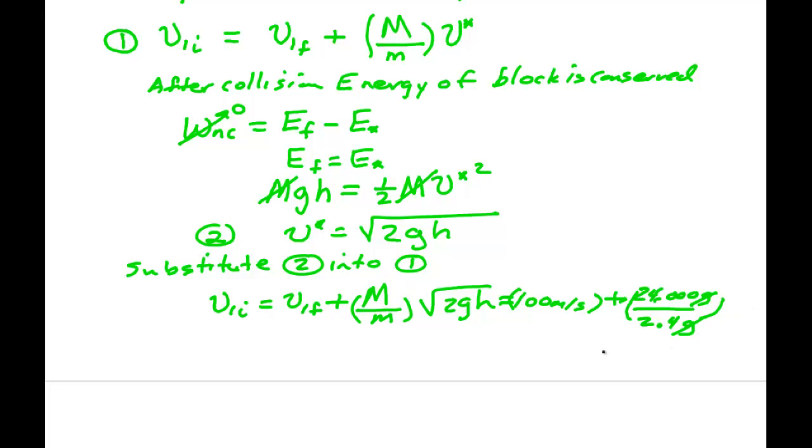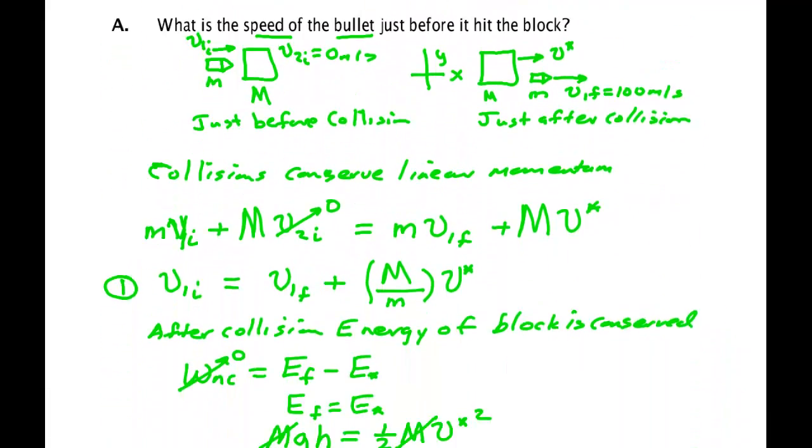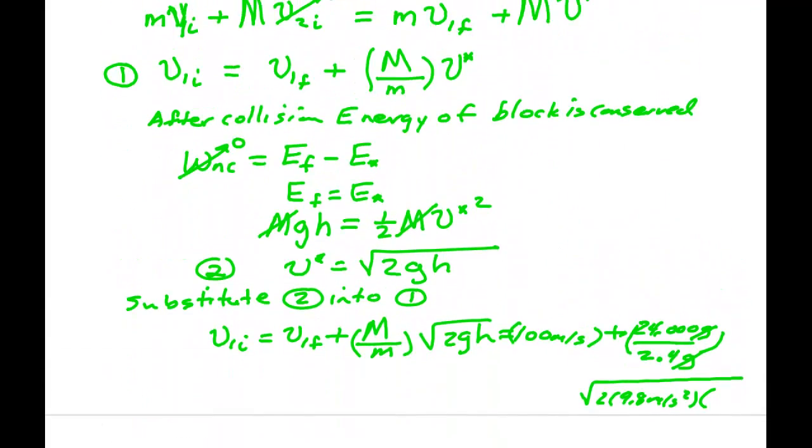And then times the square root. I have to write underneath because I don't have enough room. 2 times 9.8 meters per second squared times the height. And the height it went up to was 2.75 meters.